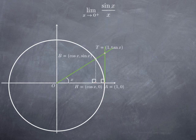Its x-coordinate is one because it has the same x-coordinate as point A. As for its second coordinate, consider the right triangle O, T, A. The tangent of x is the opposite side — the length AT — divided by the adjacent side, which is the radius OA of length one. So tangent x equals the length AT over one, meaning AT equals tan x.